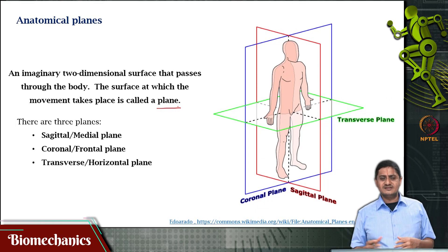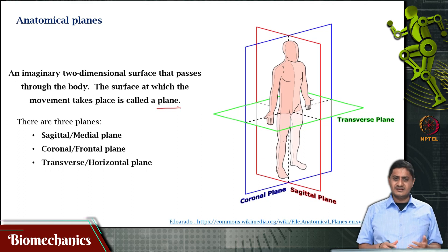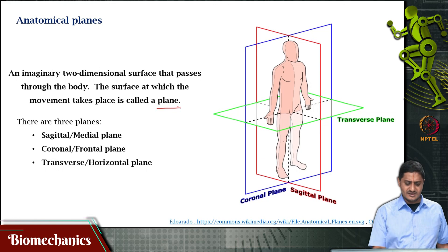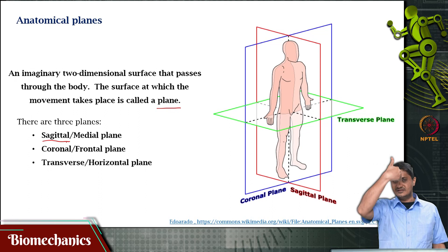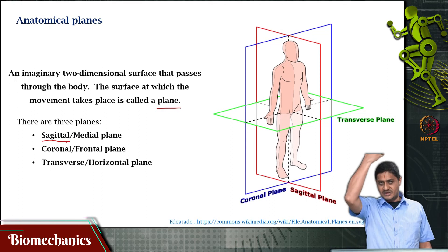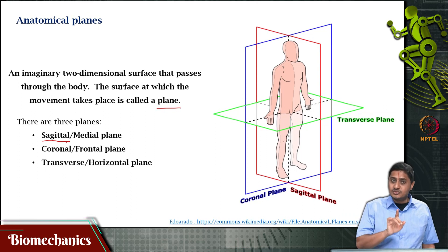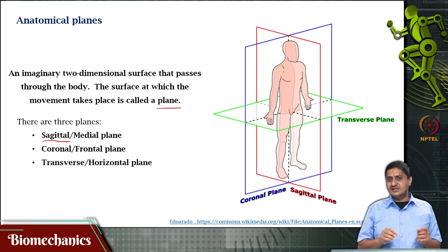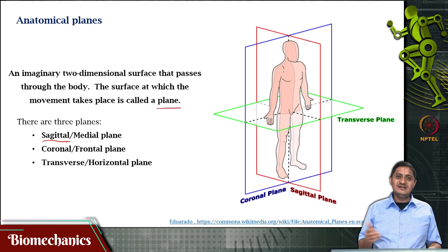There are three such planes discussed within biomechanics. The first is one that divides the body into the left side and the right side. This is called the sagittal plane. The sagittal plane passes through the head and through the body, dividing it into two sides — not necessarily two halves. The particular sagittal plane that divides the body into two equal halves is called the mid-sagittal plane.